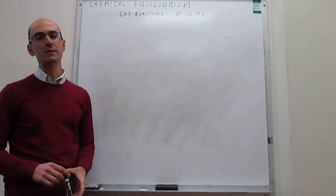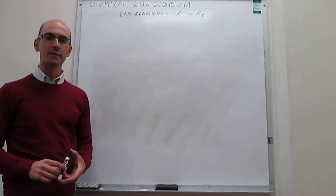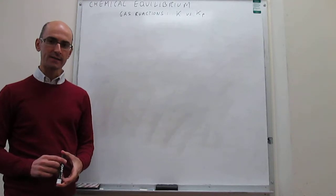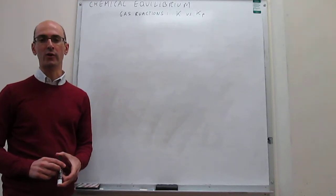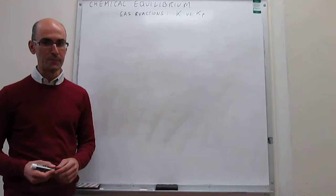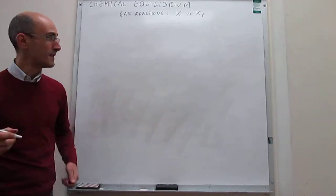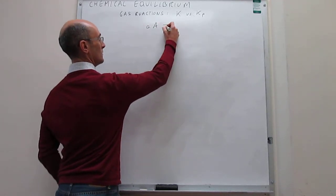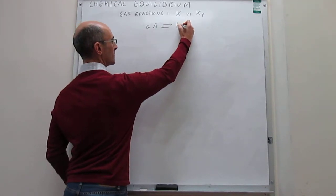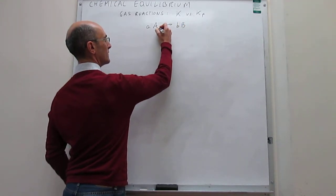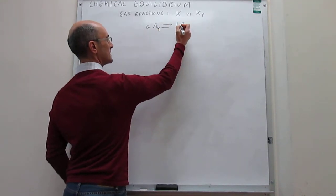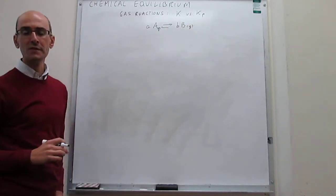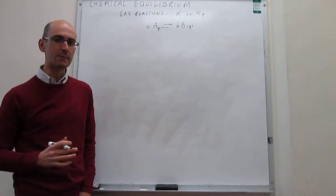In this video we examine two ways to define the equilibrium constant for gas phase reactions and examine how you can convert from one form to the other. Let's think about a gas phase reaction characterized by the following equilibrium: a gas A turning into a gas B, with stoichiometric coefficients lowercase a and lowercase b.